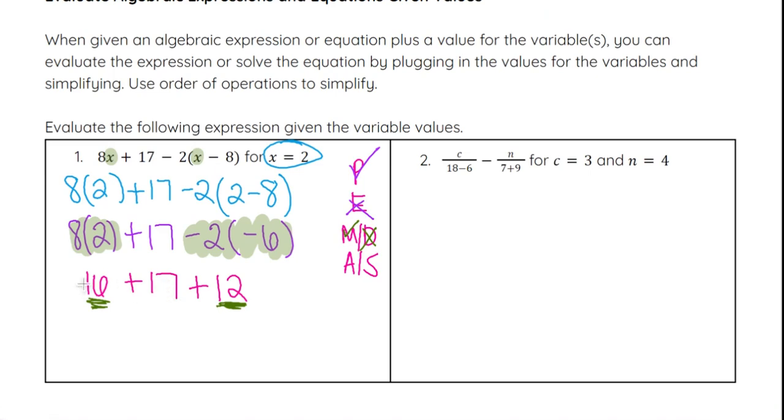That comes out to be 28 plus 17, and remember we can do that because of our commutative property. We can switch the order when it is all addition like that. So we have 28 plus 17, which gives us 45. However you add those three numbers, you're going to get 45 as your answer.